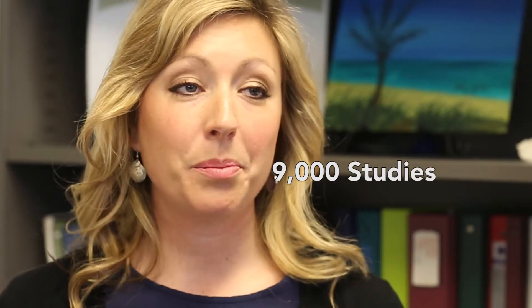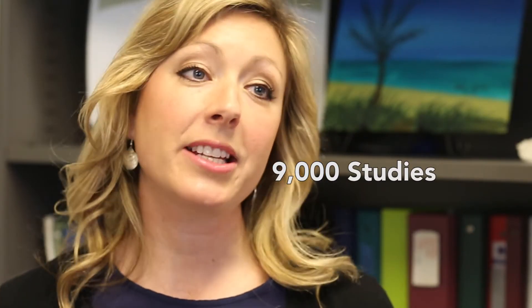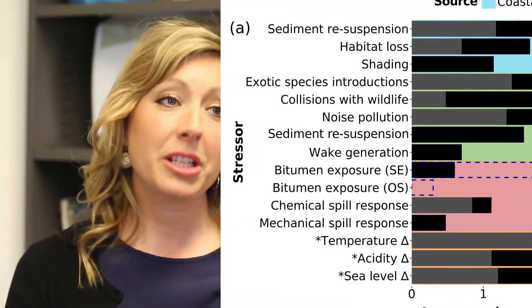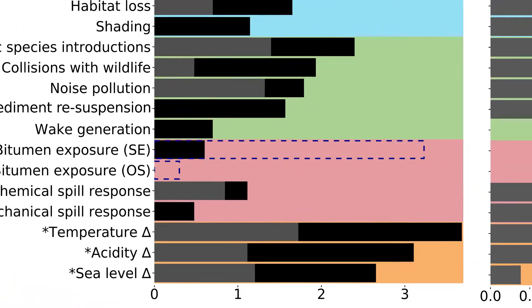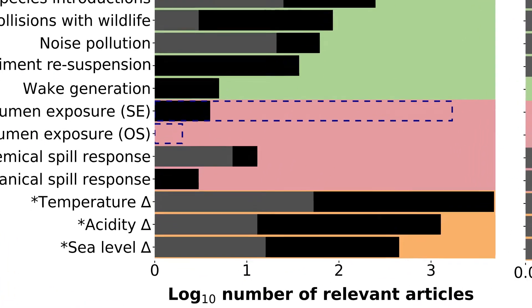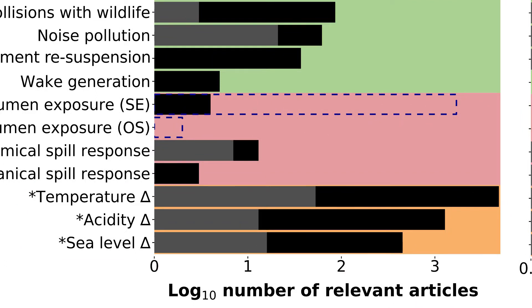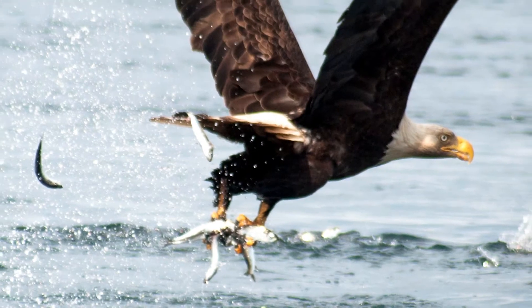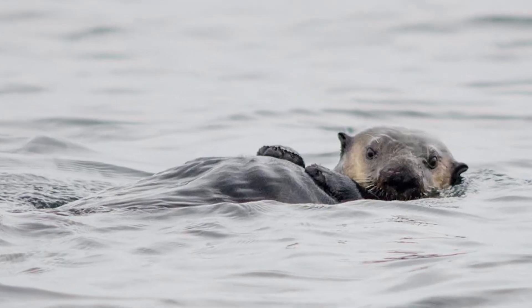We reviewed over nine thousand peer-reviewed studies that examined what we know about these 15 different types of stresses. Some of the stresses we knew quite a bit about — in particular, we found a lot of knowledge around climate change impacts. In contrast, we could only find three studies that had examined the effects of bitumen on marine organisms.